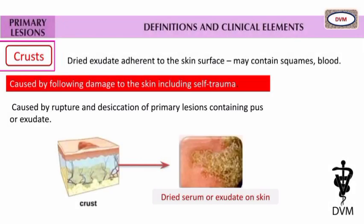What is crust skin lesion and its clinical elements? It is dried exudate adherent to the skin surface, and may contain squames or blood. It is caused by damage to the skin, including self-trauma, and also caused by rupture and desiccation of primary lesions containing pus or exudate. Watch the dried serum or exudate on skin.